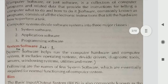Computer systems divide software into three major classes: first is system software, second is application software, and third is programming software.